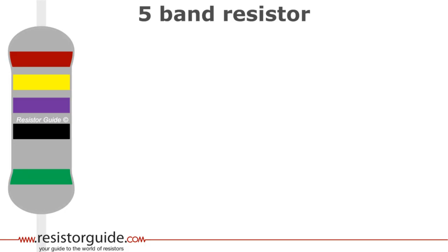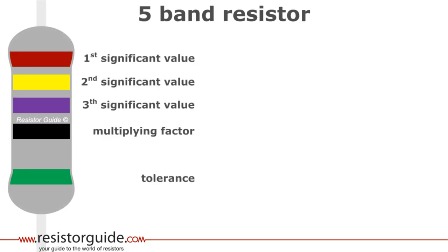Let's consider a five band resistor. The extra band is sometimes added for high precision resistors. Instead of two significant digits for the resistance value, this type of resistor has three.